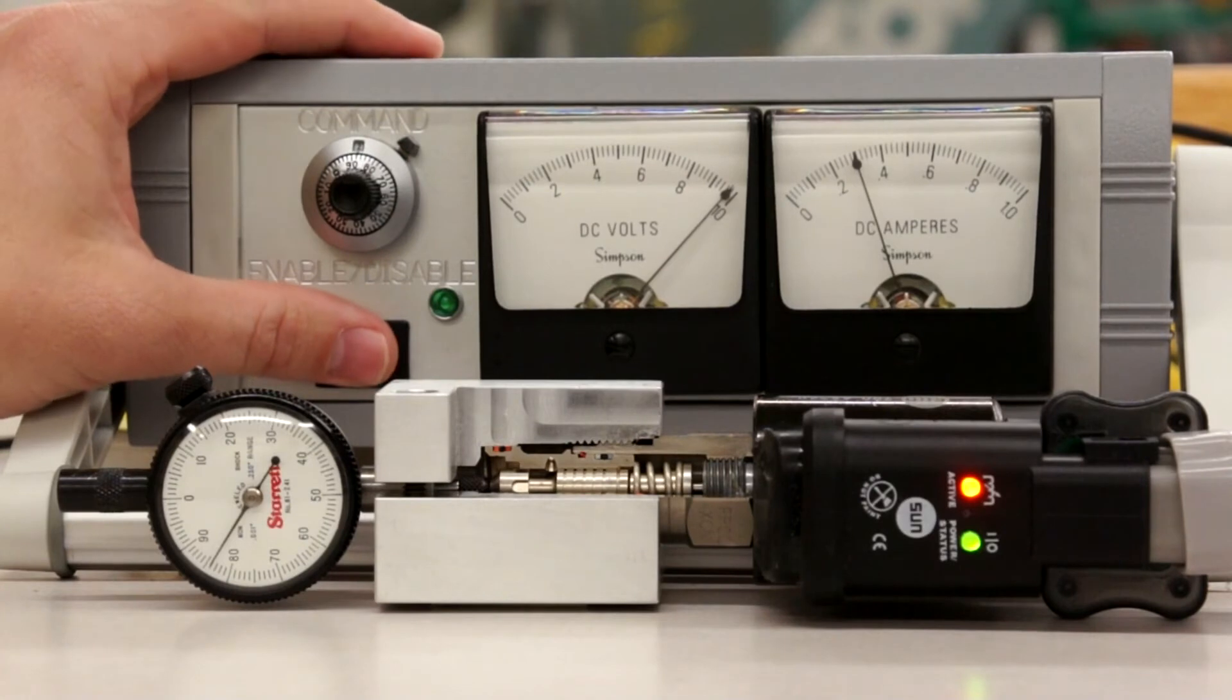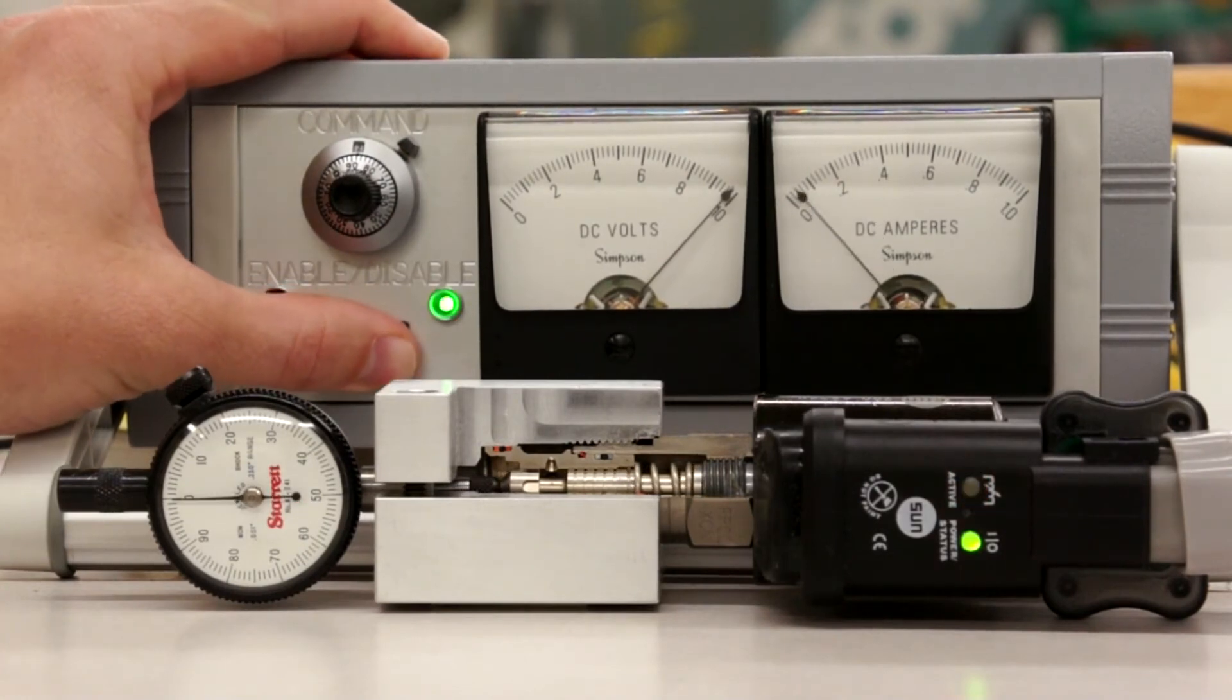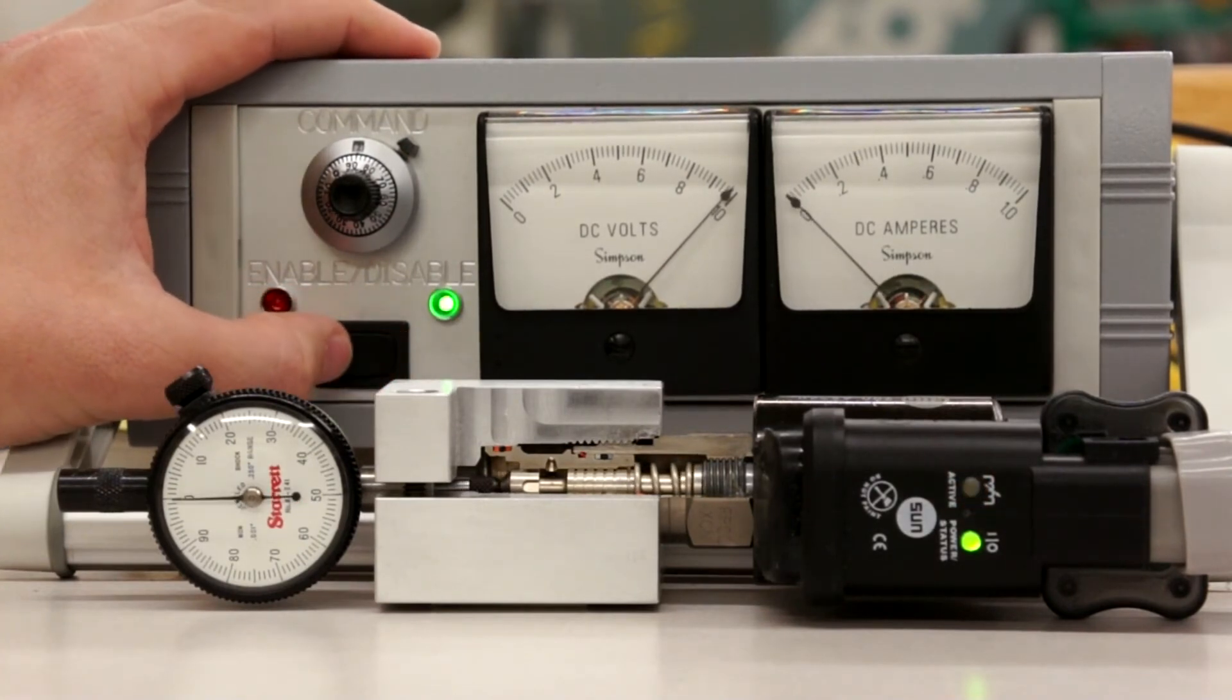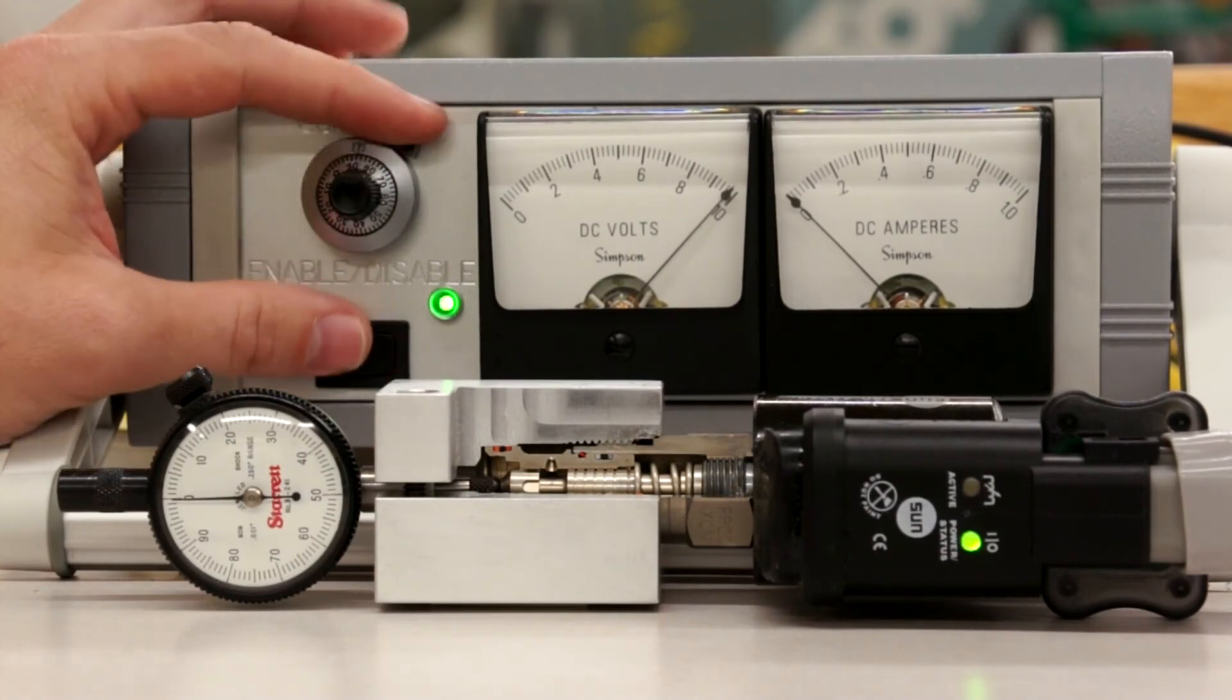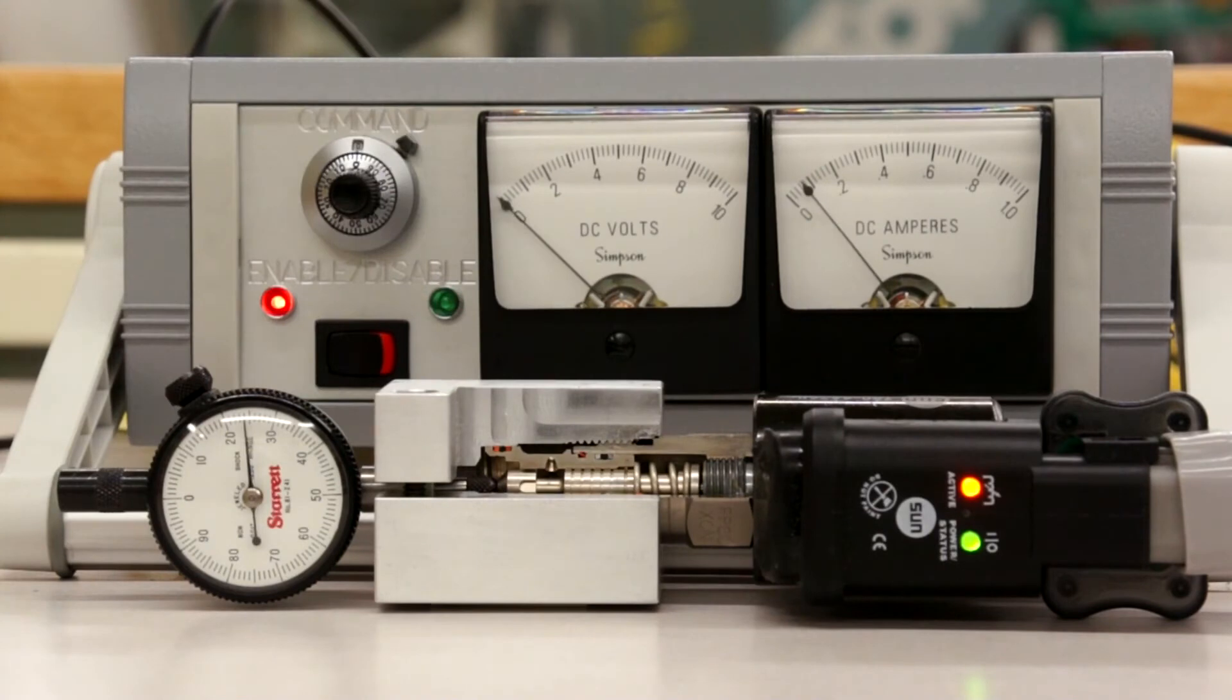If we turn off the enable, the valve will fully close. So, depending on your input of full command or enable, you have three speeds. Off, minimum output current, and maximum output current.